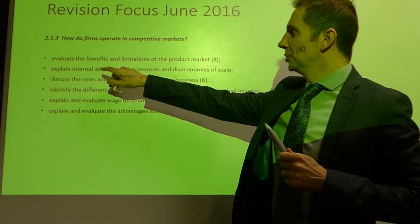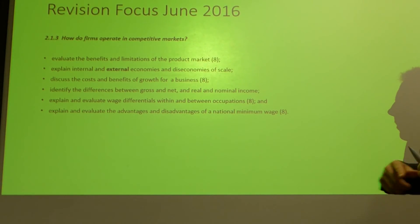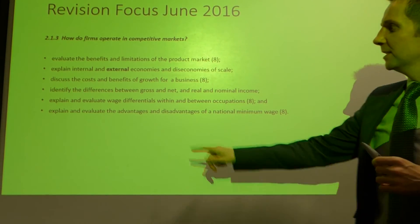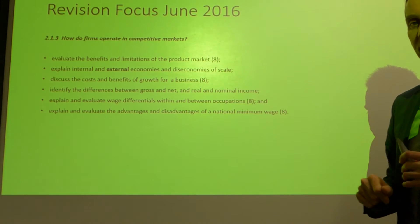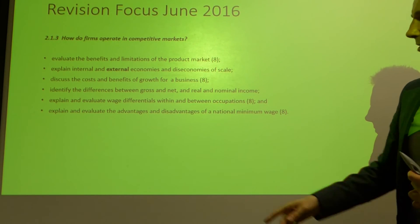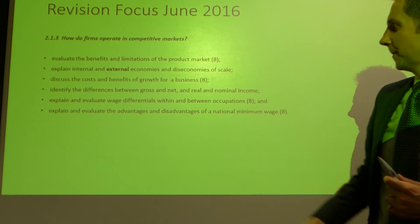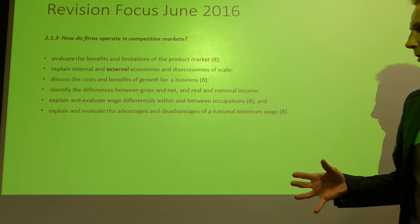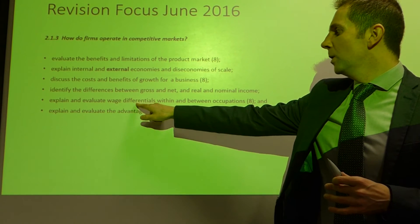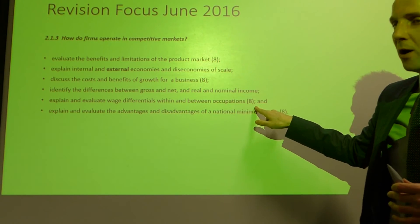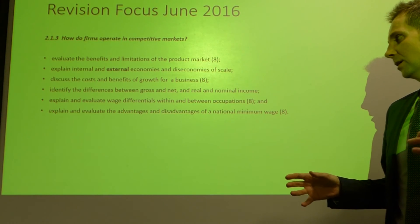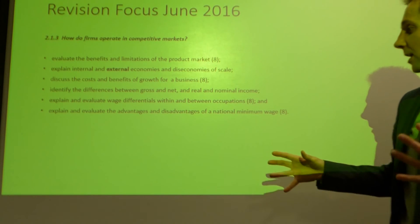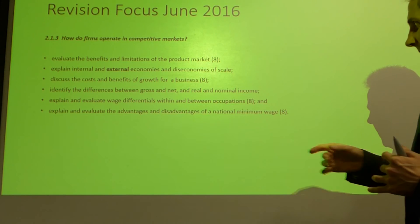Finally, in the third section — how do firms operate in competitive markets — perhaps focus on these areas: evaluate the benefits and limitations of the product market for eight marks; explain internal, but more specifically external economies and diseconomies of scale; discuss the costs and benefits of growth for a business for eight marks; identify differences between gross and net, real and nominal income — those would be lower-tariff questions but still worthy of consideration; explain and evaluate wage differentials within and between occupations for eight marks. Labour market extended answer questions have appeared in recent sessions. And on the national minimum wage — that has been on before, but with the living wage being introduced it might appear again.